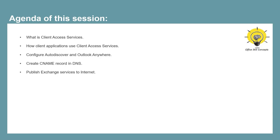In this particular video we will be talking about client access services. We will discuss what are client access services, how client applications connect to the mailboxes using client access services. We will configure Autodiscover and Outlook Anywhere in on-premise Exchange Server, and we will publish our Exchange Services to the internet so that users can access these services from external network.